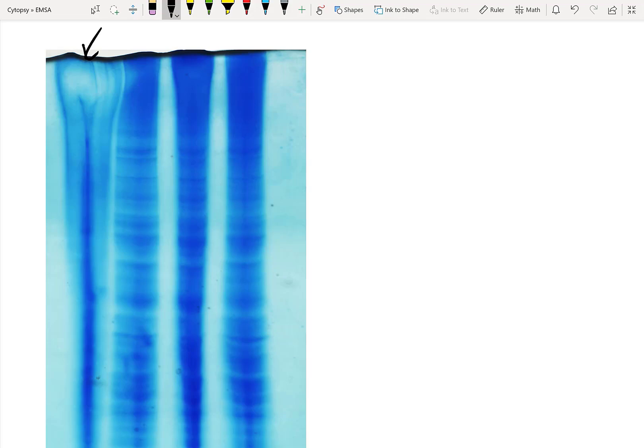Our next step is to prepare samples. But before I get into the equilibration and how you actually dilute samples, I want to talk really quickly about native gel electrophoresis versus SDS polyacrylamide gel electrophoresis or SDS-PAGE. In our case with EMSA, we're trying to see if a particular DNA wants to interact with a particular protein.